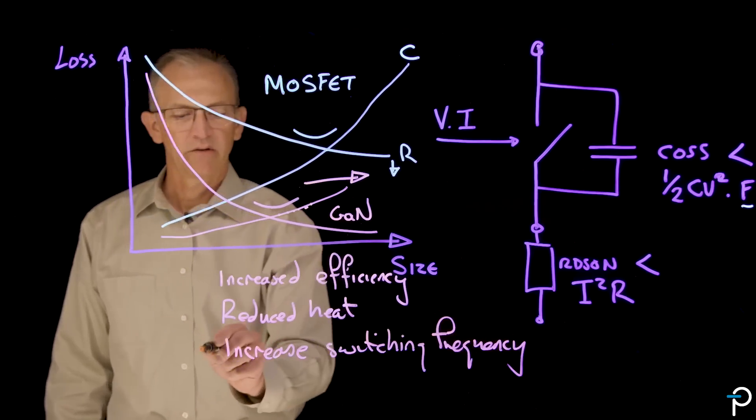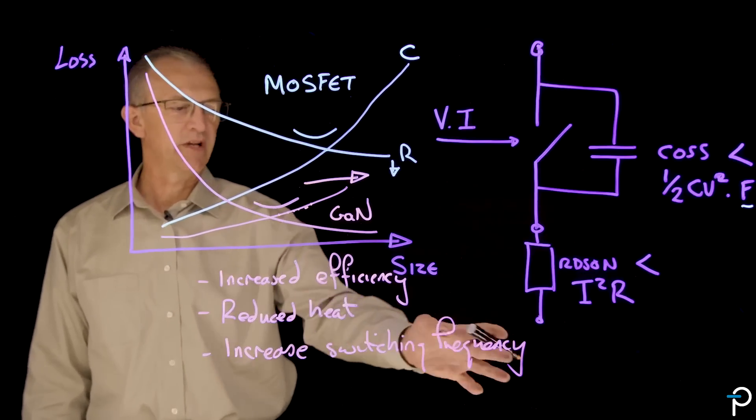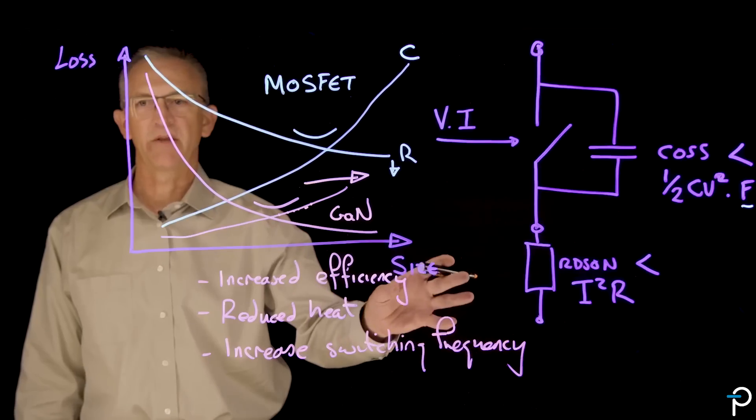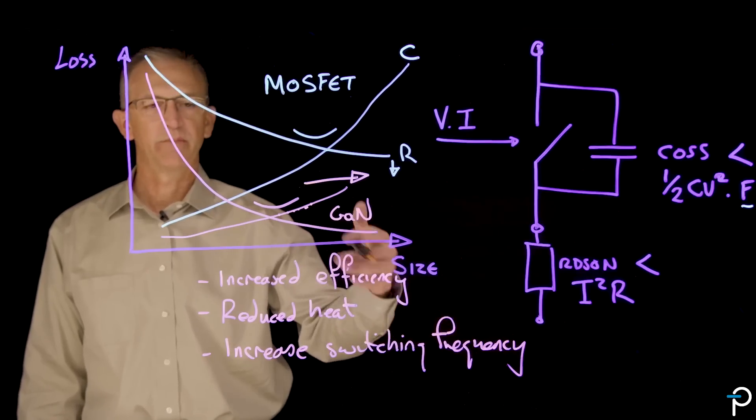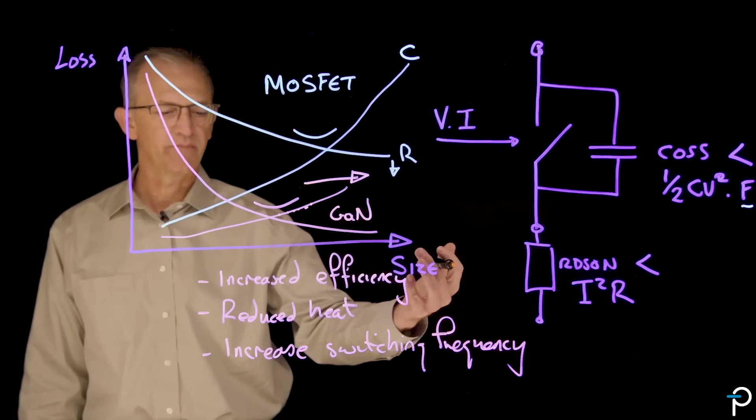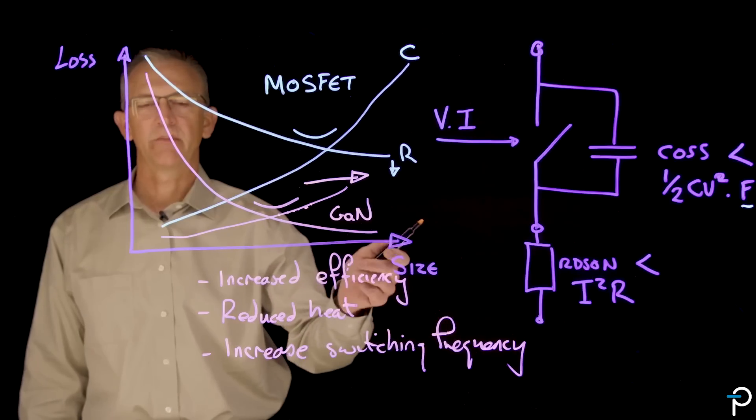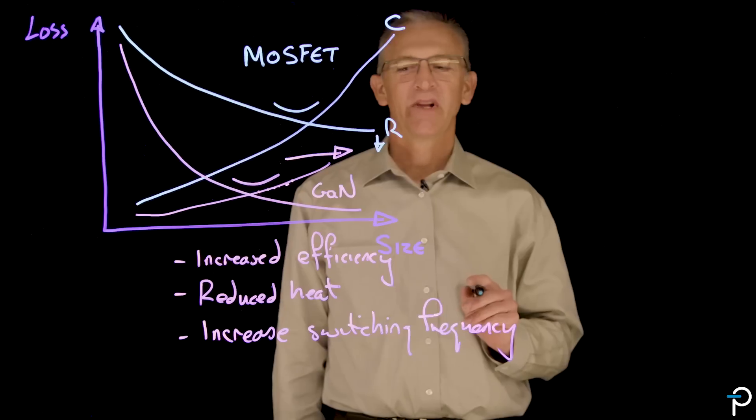Now, that's not always available to you, because you tend to be limited to a certain extent by the magnetics and other parasitic elements in your circuit. But you're no longer limited by the speed of the switch.